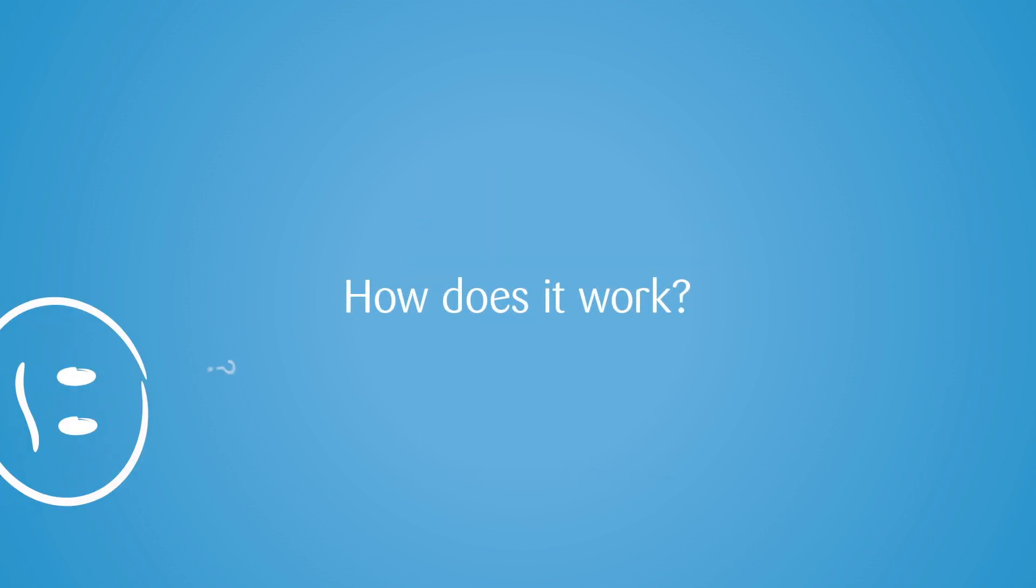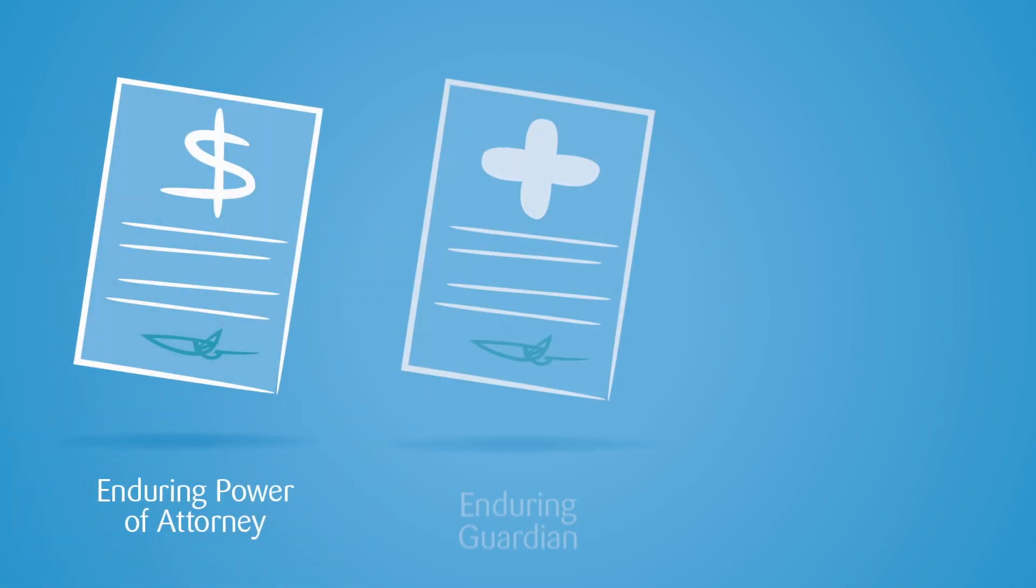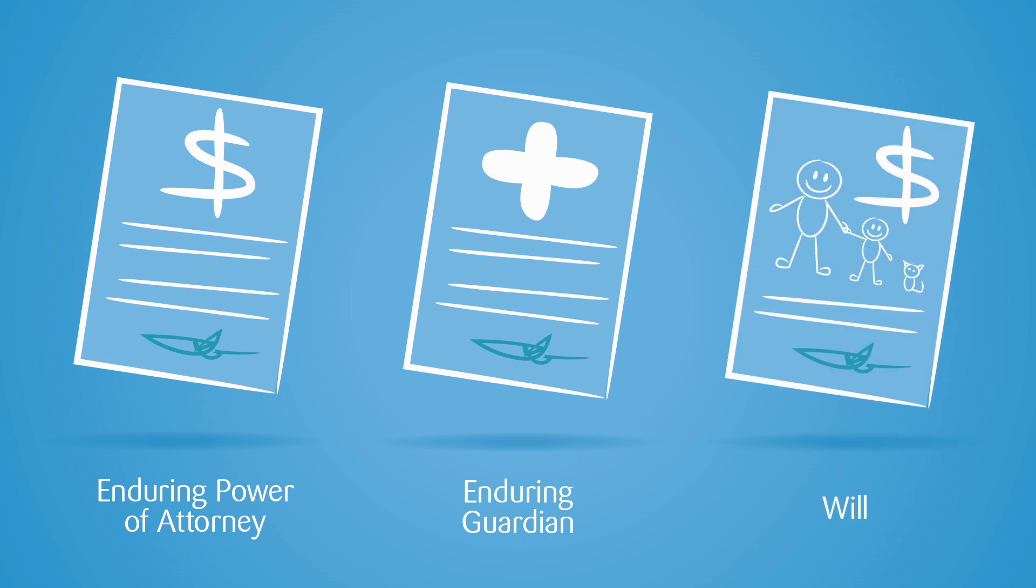How does it work? An estate plan generally consists of three legal documents: an enduring power of attorney, an enduring guardian and a will. These are separate documents each covering a distinct and important aspect of your care and estate.